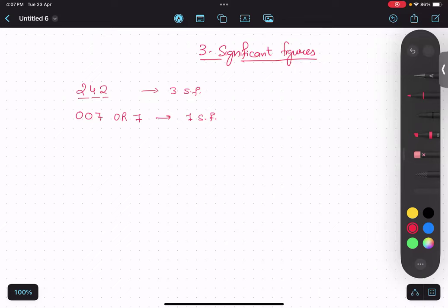Because of the zeros in the beginning, zeros in the beginning we do not include. We do not include. That is one significant figure only.